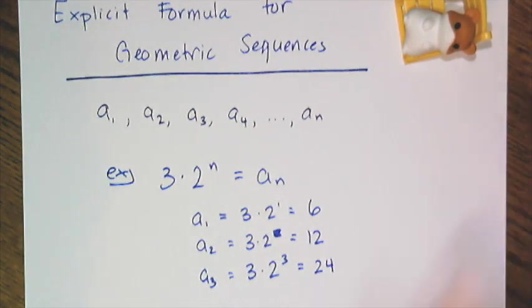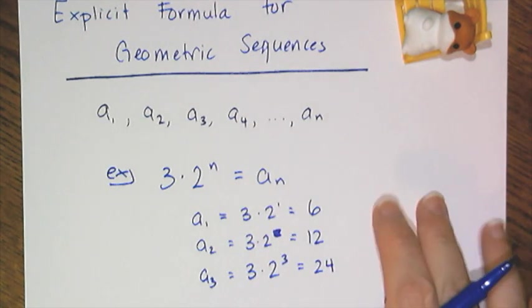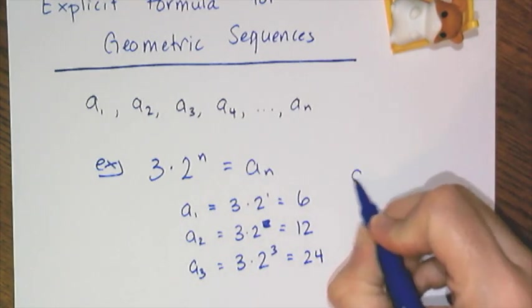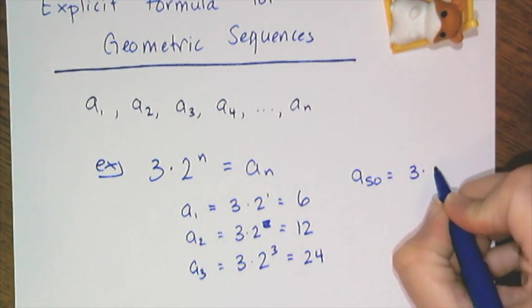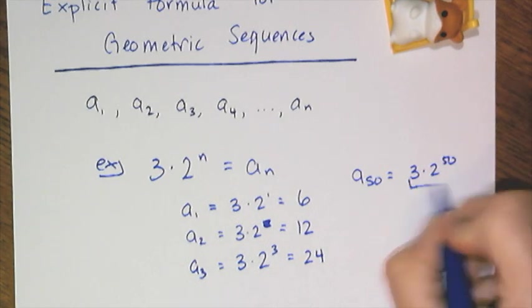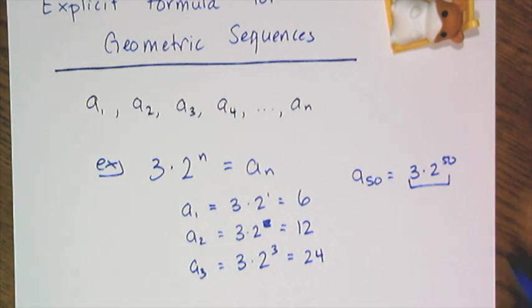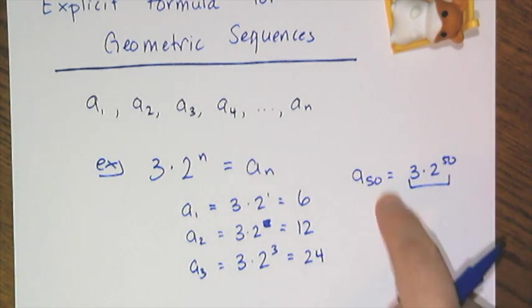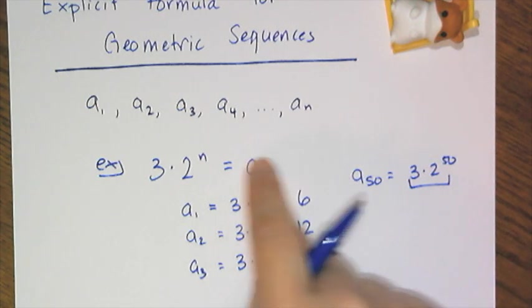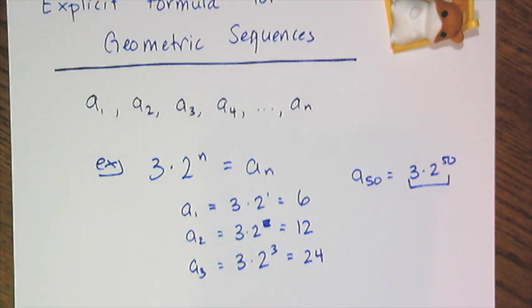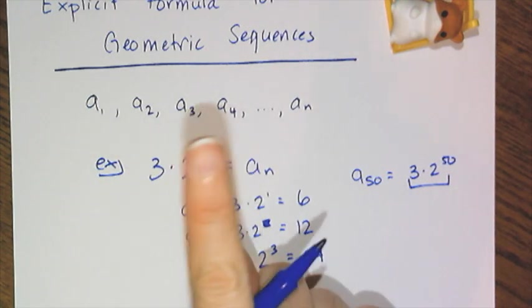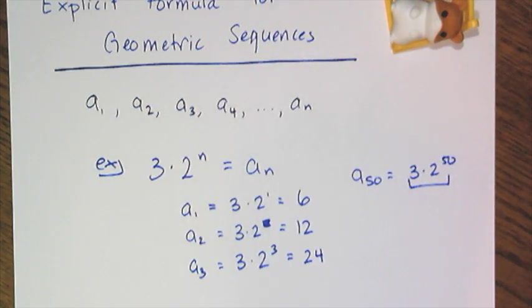I can continue doing this and generate the sequence. Now, the benefit of an explicit formula is if I want to find the 50th term, I can just plug in a 50 and get the value of the 50th term. If I had a recursive formula only, then I'd have to know 49, and then 48, and 47, 46, all the way down to the first term, which is not fun. So that's the benefit of an explicit formula.